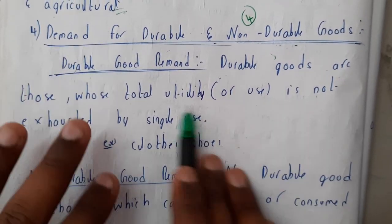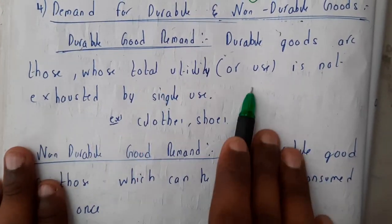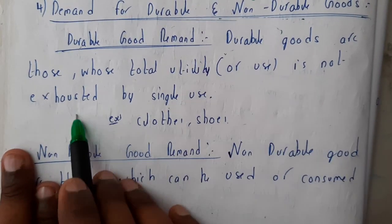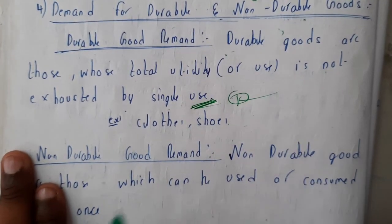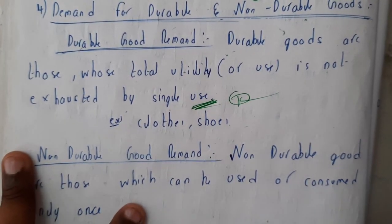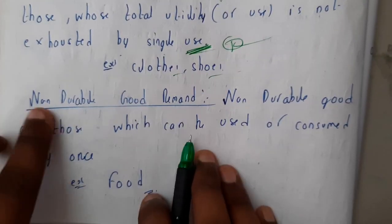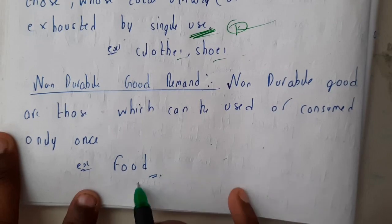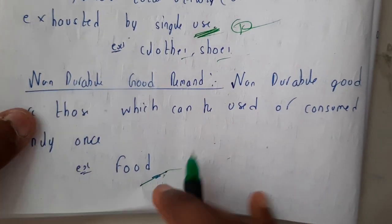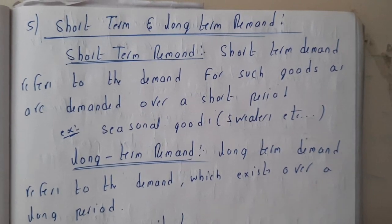Durable goods are those whose total utility or use is not exhausted by a single use — they exist after single use also. Examples are clothes and shoes. Non-durable goods will not exist after single use, like food. If you eat food, you cannot get it back without paying money again, so food comes under non-durable.